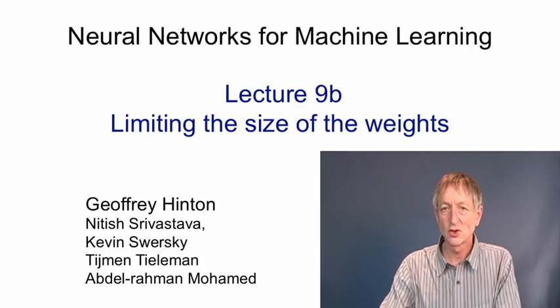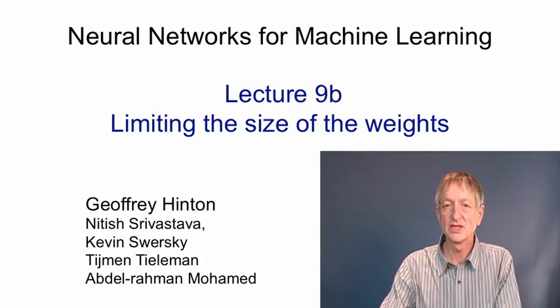In this video I'll talk about how we can control capacity by limiting the size of the weights. The standard way to do this is to introduce a penalty that prevents the weights from getting too large, with the implicit assumption that a network with small weights is somehow simpler than a network with large weights.